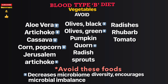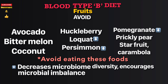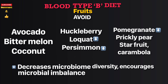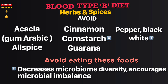Vegetables to avoid: aloe vera, artichoke, cassava, corn, popcorn, Jerusalem artichoke, black olives, green olives, pumpkin, corn radish, radish sprouts, radishes, rhubarb, and tomato. Fruits to avoid: avocado, bitter melon, coconut, huckleberry, kumquat, persimmon, pomegranate, prickly pear, and starfruit (carambola).